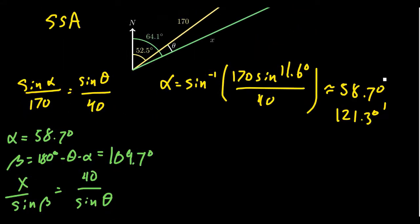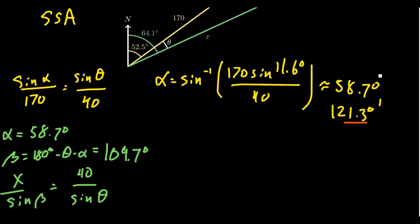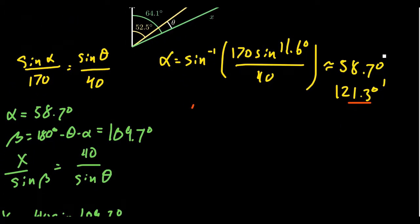But that's one of two possibilities, maybe. We have to investigate the obtuse case. Maybe 121.3 degrees works. It actually seems quite feasible. So if alpha was equal to 121.3 degrees, we have to still compute beta. Beta would be 180 degrees minus theta, which is 11.6, minus alpha, which in this case is equal to 121.3. In that situation, you actually do get a positive value for beta. You get 47.1 degrees. So it turns out there are two possibilities.